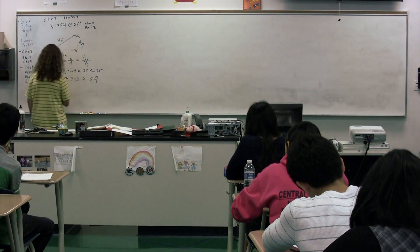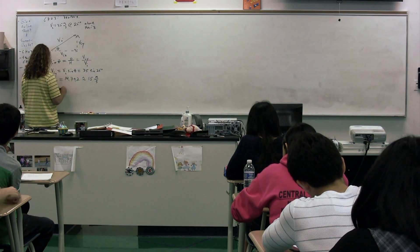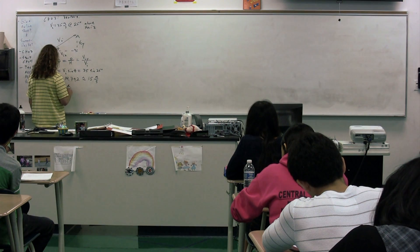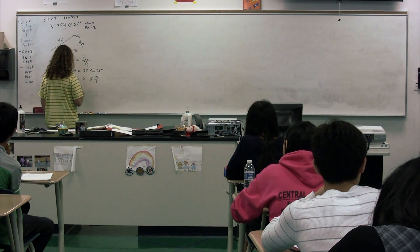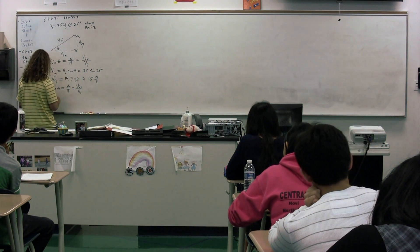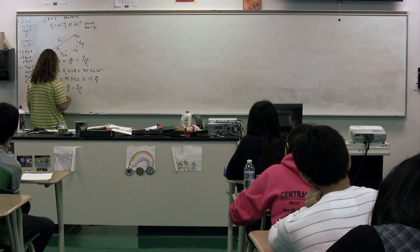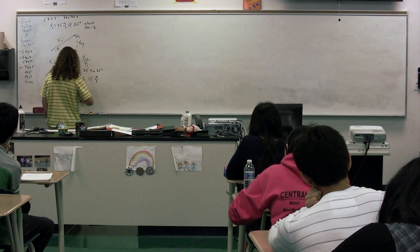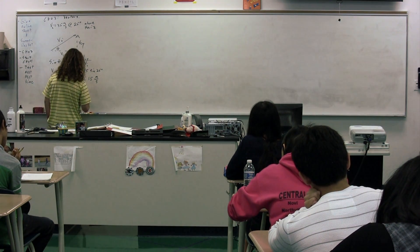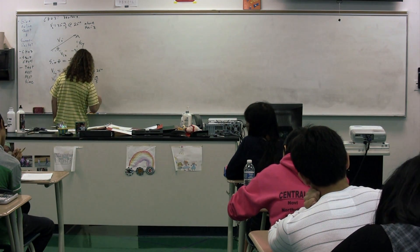We would do velocity initial in the x-direction, which is equal to the adjacent over hypotenuse, which is equal to velocity initial in the x-direction over velocity initial. Good. Therefore, we get that the velocity initial in the x-direction is equal to the velocity initial multiplied by the cosine of theta, or 35 times the cosine of 25 degrees.